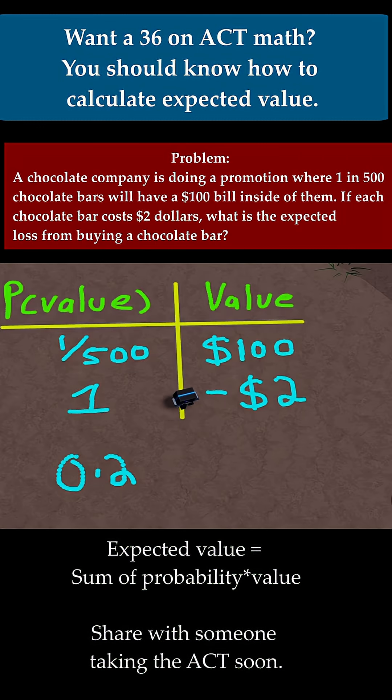And then 0.2 minus 2 is just negative 1.8. So let me just rewrite that minus sign on the outside and put a dollar sign in here. So this says, on average, if you bought lots and lots of chocolate bars, you would lose $1.8 for every chocolate bar. So this is our expected value.